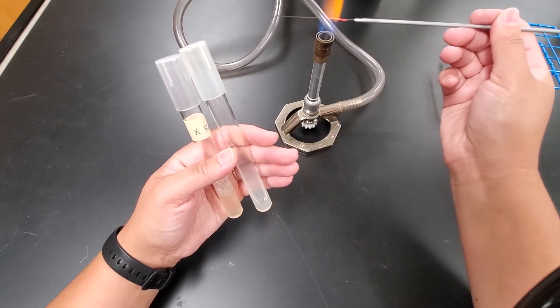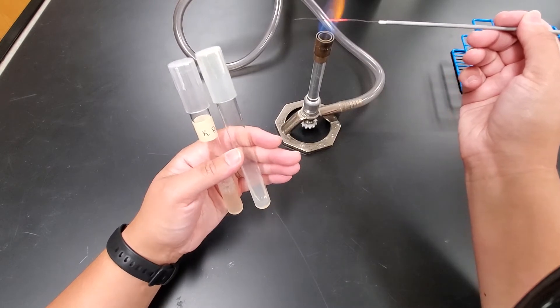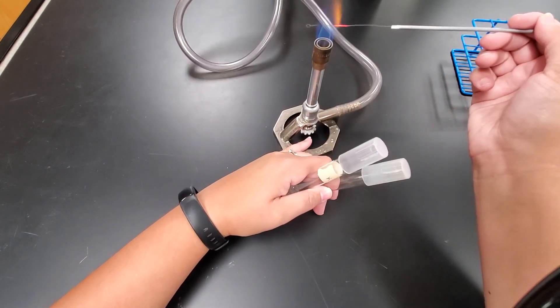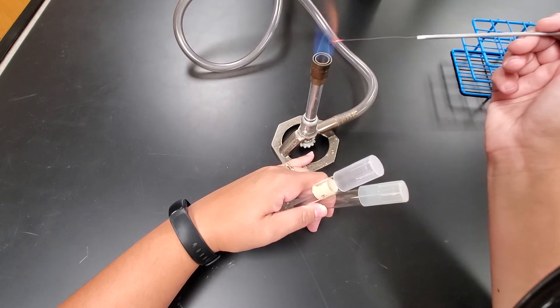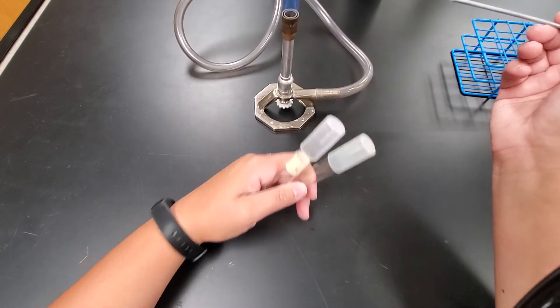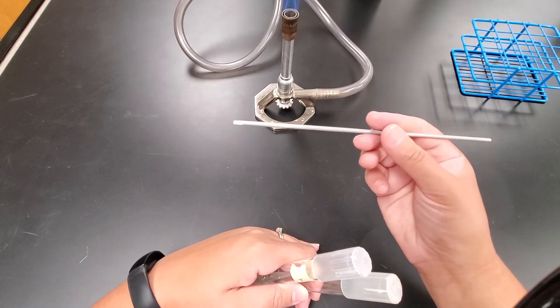So remember, whenever you flame your loop, you're going to start at the base by that handle, and you're going to move through that hottest part of the flame until you get to the tip, which is where the loop is located. So once you have that, now I'm holding this like a pencil.